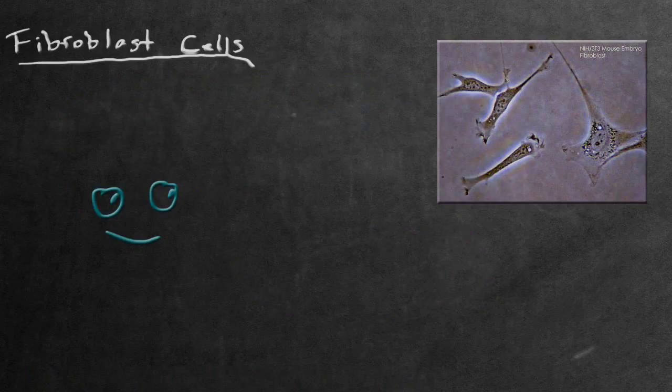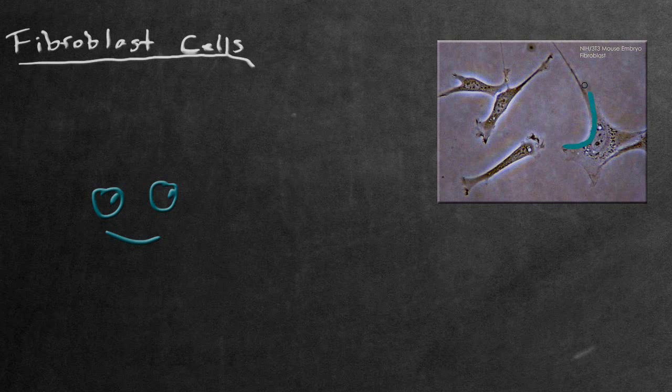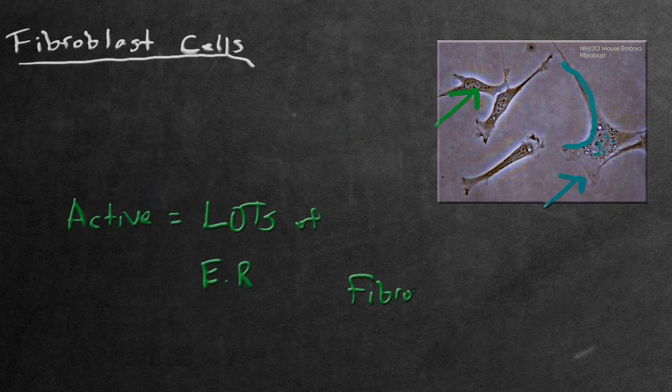Now, what do they look like? They have a branched cytoplasm surrounding an elliptical speckled nucleus, having two or more nucleoli. The active form of fibroblasts can be recognized by their thousands of endoplasmic reticulum. The inactive fibrocytes have a very small amount in comparison.